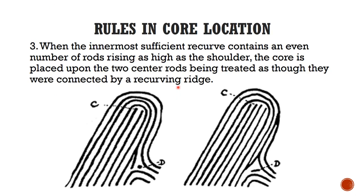Rule number three applies to even numbers of rods. When the innermost sufficient recurve contains an even number of rods rising as high as the shoulder, the core is placed upon the two center rods, treating them as though they were connected by a recurving ridge. You draw an imaginary recurving ridge connecting the two center rods, then apply rule one and place the core at the innermost sufficient recurve. This applies equally when there are four rods.